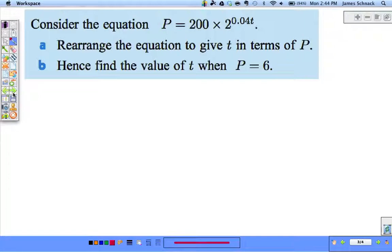Consider this exponential growth equation P = 200 × 2^(0.04t). Rearrange to give t in terms of P—that means solve for t. So P divided by 200 equals 2^(0.04t). We want the power by itself. Now that the power's alone, we change it to a log.